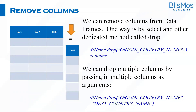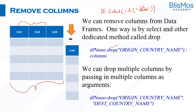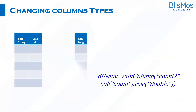To remove columns, one way is to use the select() method — select only the columns you want to keep. But a more explicit way is to use the drop() method. Specify the column you want to drop; if you want to drop multiple columns, just mention all the column names separated by a comma.